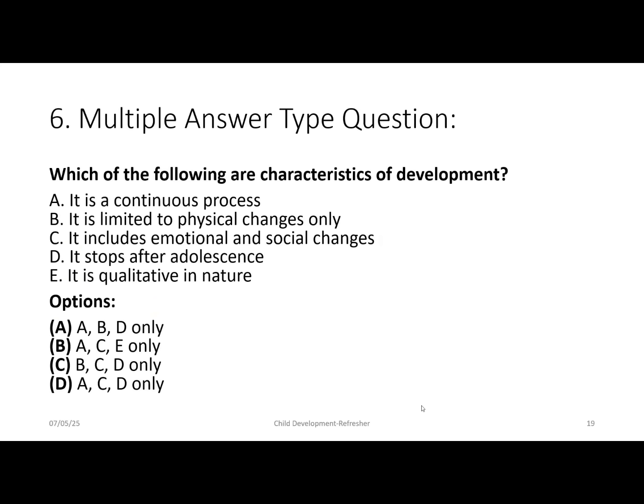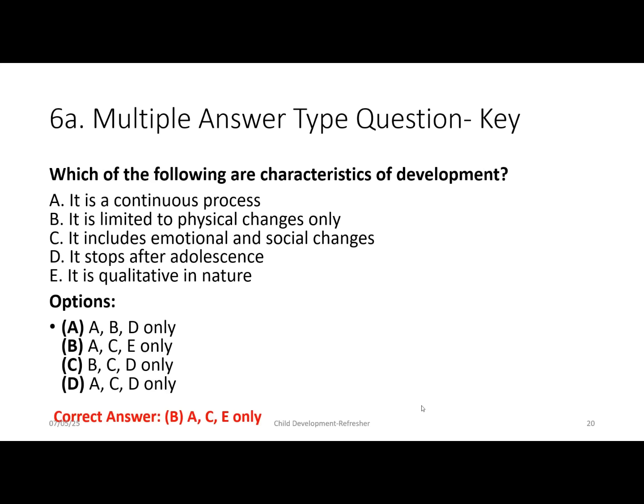The sixth type is multiple answer type questions, where you have five statements and multiple may be correct. Example: 'Which of the following are characteristics of development?' A: it is a continuous process; B: it is limited to physical changes only; C: it includes emotional and social changes; D: it stops after adolescence; E: it is qualitative in nature. The correct answer is option B — A, C, and E only — because development is a continuous, qualitative process that includes emotional and social changes.